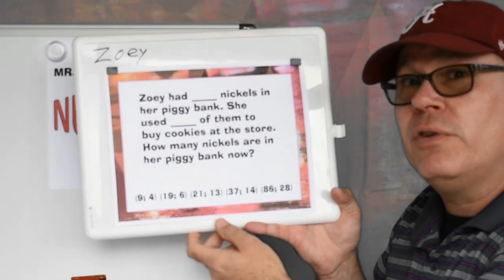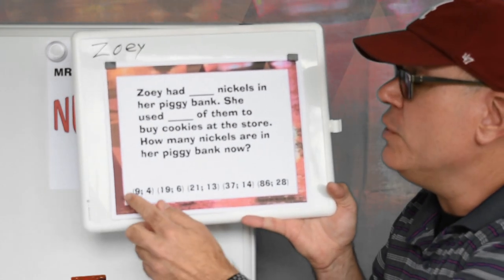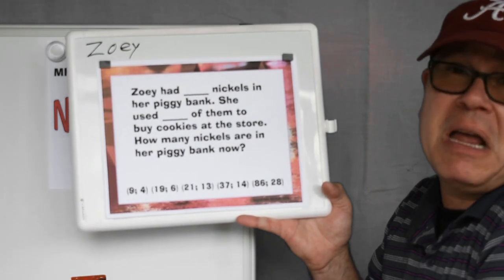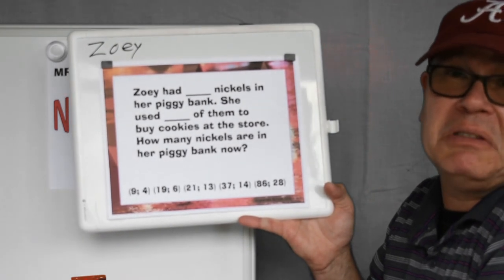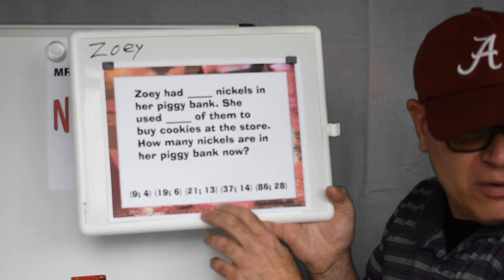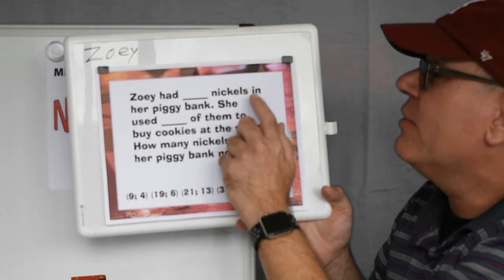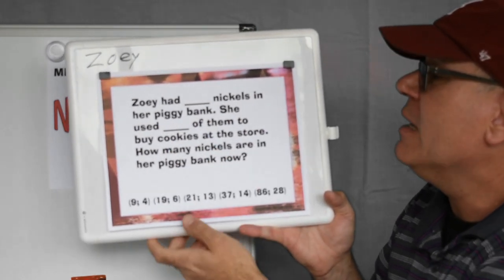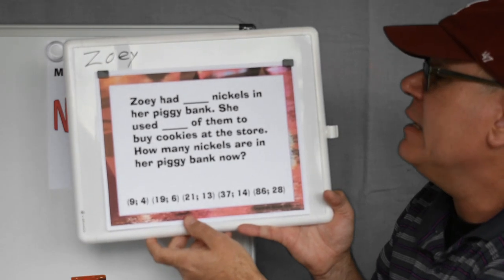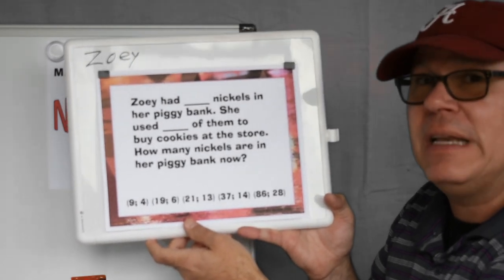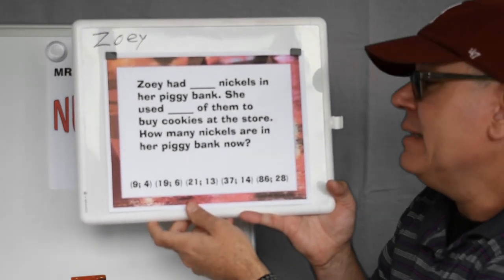Well, you can use your own numbers, you can use the numbers down here, or you know, I'm going to make my own up too. So I'm going to say that Zoe had ten nickels in her piggy bank, and she used five of them to buy cookies at the store. How many does she have left in her bank now?